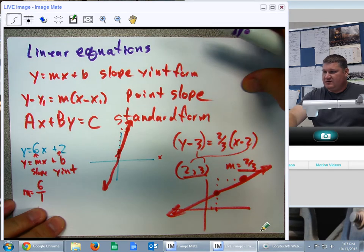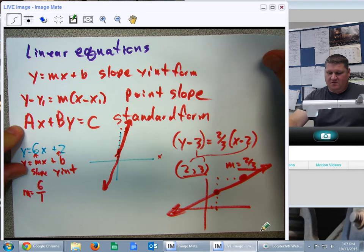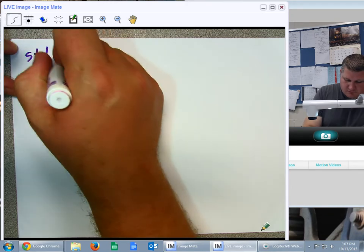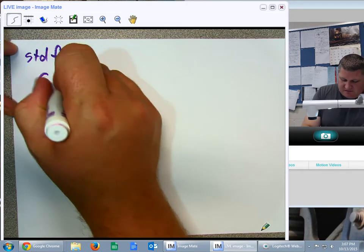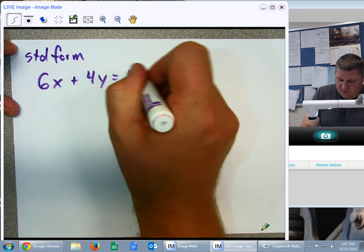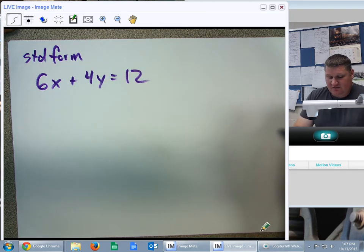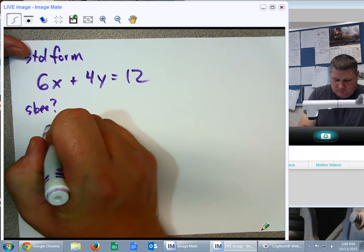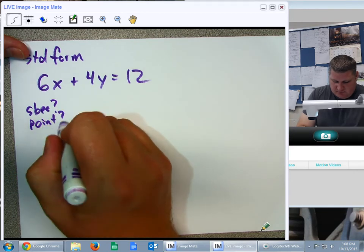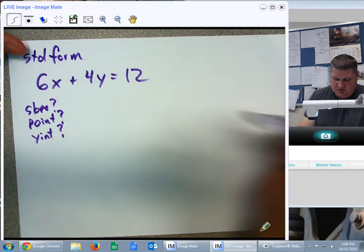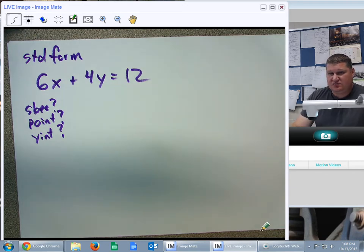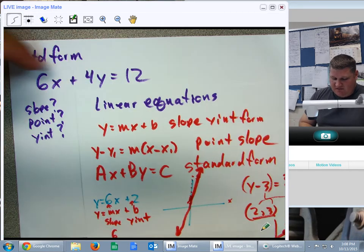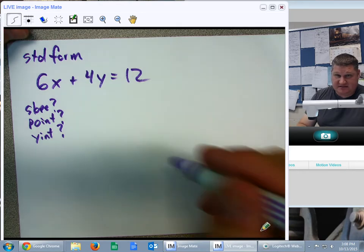We also talked about standard form. Standard form is a little tougher because in standard form, you have something like this. 6x plus 4y equals 12. And in this case, 6x plus 4y equals 12, I don't know what my slope is. I don't know a point. I don't know an intercept. Don't know any of those things. So, what I need to do is the only thing standard form is good for at this point is converting to one of these other forms.